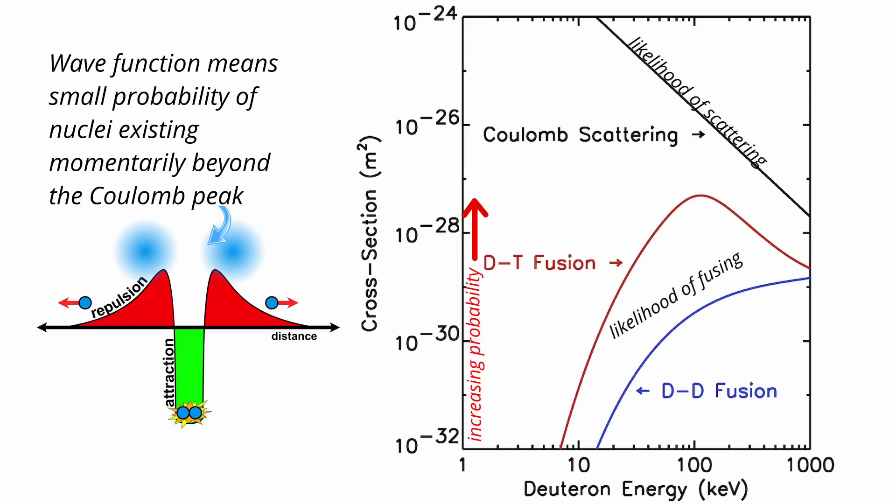So if quantum tunneling can explain why fusion occurs at a higher rate in tokamaks, could it also be an explanation for LENR?